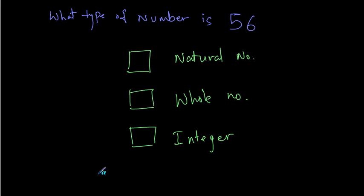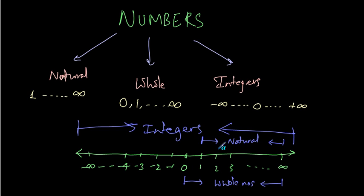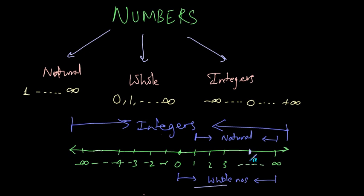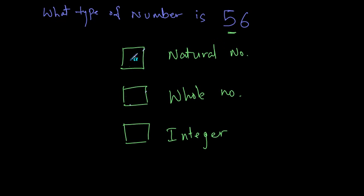Now, let's see whether the number 56 is a natural number, a whole number, or an integer. So, 56, if we take the reference of our number scale, is going to lie on the positive side of the number scale — somewhere here. This part comes under natural numbers, whole numbers, as well as integers. So, 56 is a natural number, a whole number, as well as an integer.